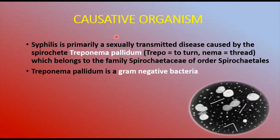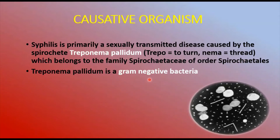The causative organism of syphilis is the bacterium Treponema pallidum, where 'trypano' means to turn and 'nema' means thread or line. Treponema pallidum belongs to the family Spirochaetaceae, order Spirochaetales, and it is a gram-negative bacterium.